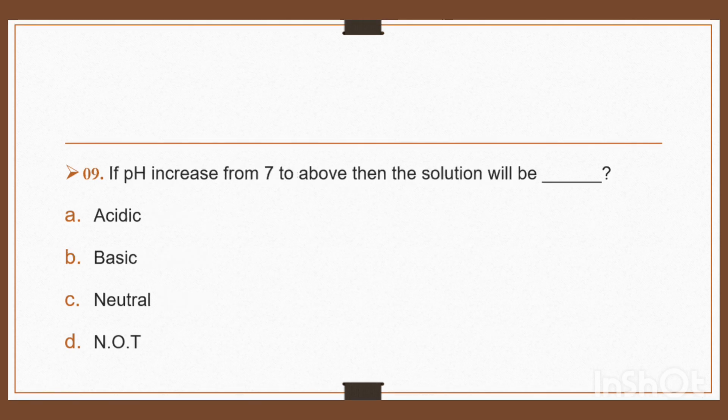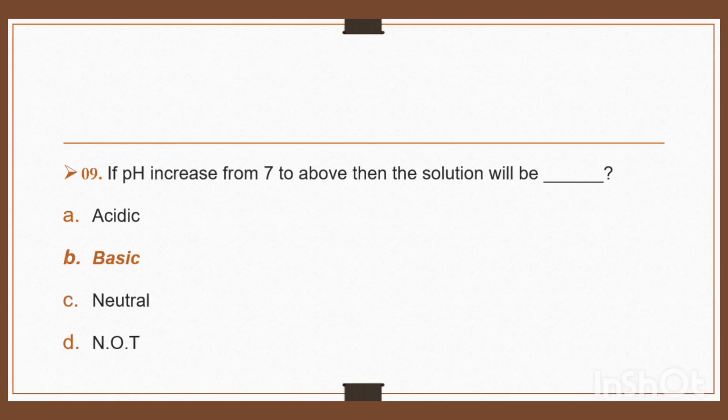Question 9: If pH increases from 7 to above, then the solution will be — option A: acidic, option B: basic, option C: neutral, option D: none of these. If pH increases from 7 to above, then the solution will be basic. Right, option B: basic.